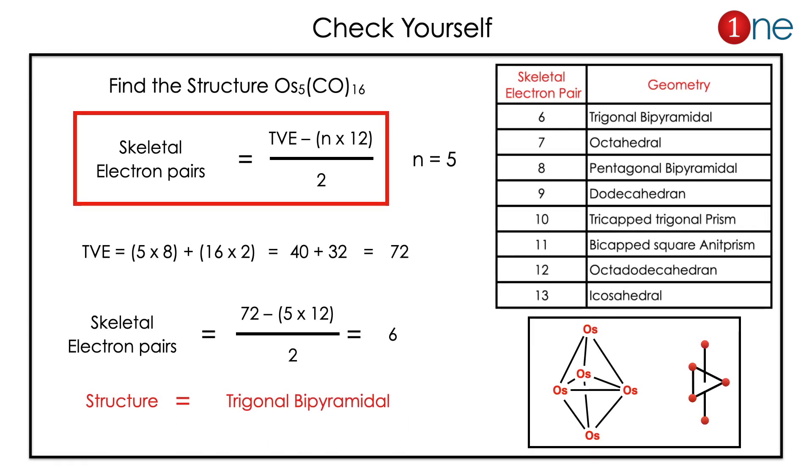Here, better check yourself by solving the problem. Here the given compound is Os5(CO)16. If you calculate the total valence electrons, it will be 5 metals, 8 is the valence of it, and 16 times 2, which is for 16 CO ligands, you have 72.